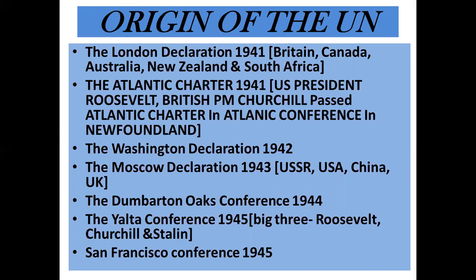Regarding the origin of the UN: the London Declaration in 1941 was signed by Britain, Canada, Australia, New Zealand, and South Africa. Then the Atlantic Charter was signed by US President Roosevelt and British Prime Minister Churchill at the Atlantic Conference in Newfoundland. The main points were: to maintain international peace and security, encourage international cooperation in the social, economic, and cultural sphere, promote self-determination of all nations, develop friendly relations among nations, and recognize the fundamental rights of all people.